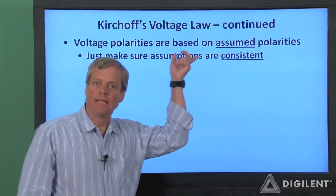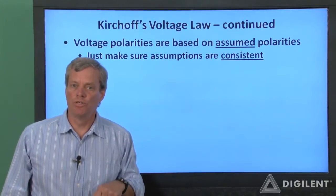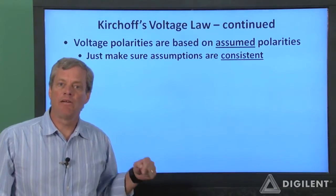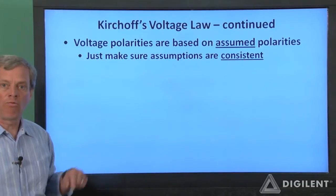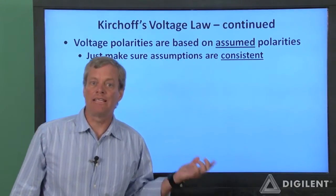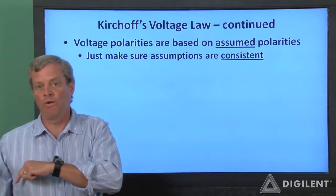Remember that KVL applies to differences in the assumed voltages around a closed loop. These differences are based on the assumed polarities of the voltage in the loop. In order to make sure that things work out right, you just need to make sure that you're consistent about your assumed polarities and the signs you assign to the voltages when you write your KVL equations.